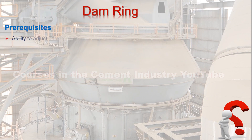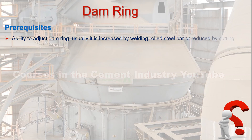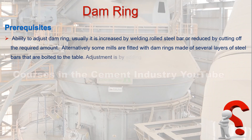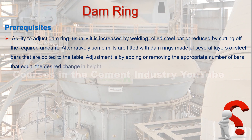Prerequisites — ability to adjust dam ring: usually it is increased by welding rolled steel bar or reduced by cutting off the required amount. Alternatively, some mills are fitted with dam rings made of several layers of steel bars that are bolted to the table. Adjustment is by adding or removing the appropriate number of bars to achieve the desired change in height.